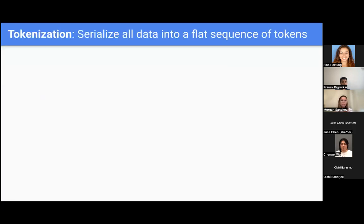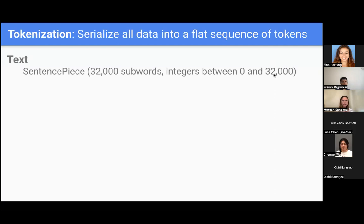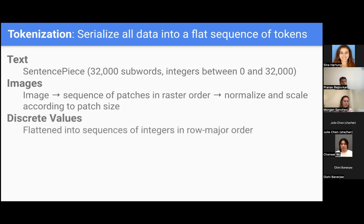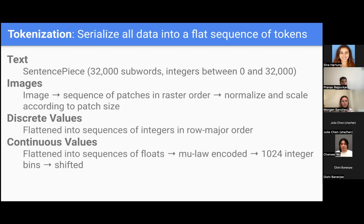Just to jump into the tokenization they use: they essentially serialize all of the data into a flat sequence of tokens. For text, they use SentencePiece, which maps the text onto integers between zero and 32,000. For images, they take the image and turn it into a sequence of patches in the order they appear, normalize those patches and scale them according to patch size. For discrete values, they flatten them into sequences of integers, and continuous values are mapped onto integer values.